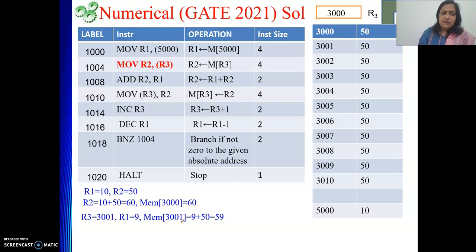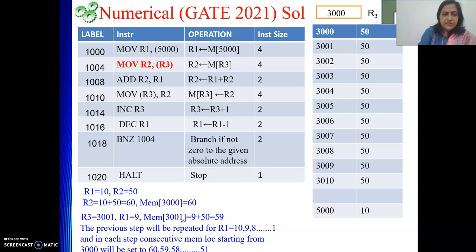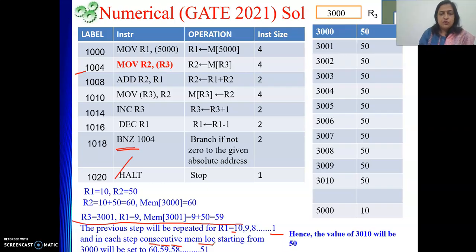So this way we will continue running the loop for all the possible values of R1, starting from 10 till 1. So this particular step will be repeated for R1 equal to 10, 9, 8 and 1. Because branch not equal to 0, if it is not equal to 0 then only I will go here. But if it becomes 0, then we will halt. And what we are doing in each iteration? In each step, consecutive memory location starting from 3000 will be set to 60, 59, 58 and till 51. So after that we will halt. Hence the value of 3010 will be 50, because it is not getting modified inside the loop.